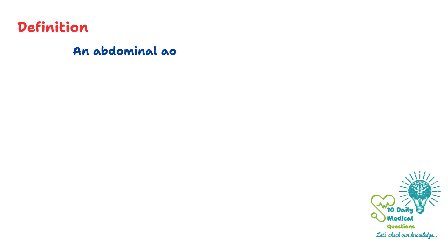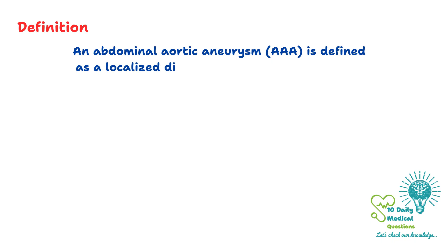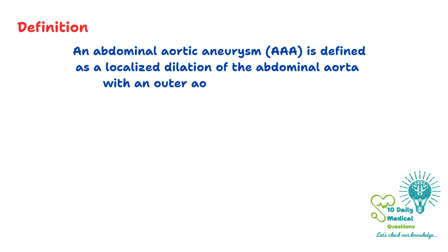An Abdominal Aortic Aneurysm is defined as a permanent localized dilation of the abdominal aorta with an outer aortic diameter equal to or greater than 3 cm.